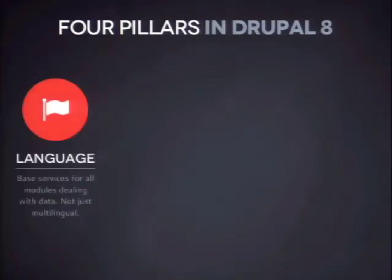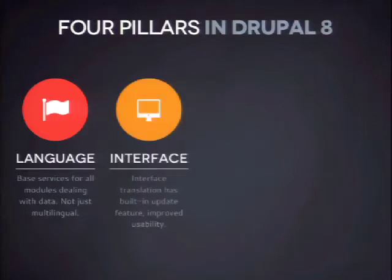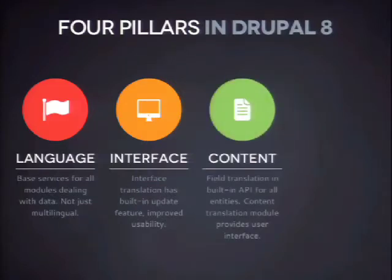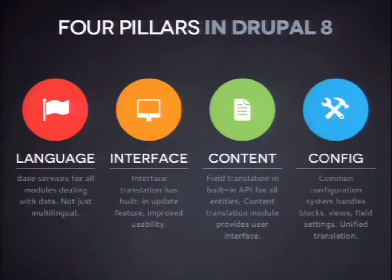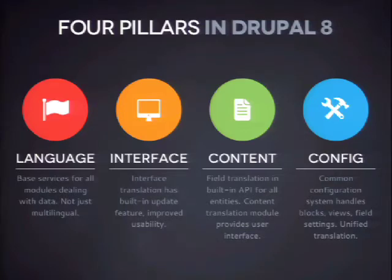The first pillar is language, which lets you set up languages on your site and do all kinds of stuff. Then we have a pillar for interface, which is your software translation — you can translate your software with a lot of automation and cool features. We have a pillar for content, which covers all kinds of entities in Drupal core. And we have a pillar for configuration, which was the most lacking thing in Drupal 7 — translating your views, site name, slogan, contact categories, user roles, and so on. We wanted to provide native language support and build three parallel layers on top: for software, for content, and for configuration.